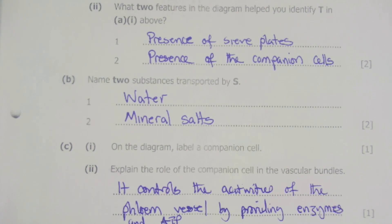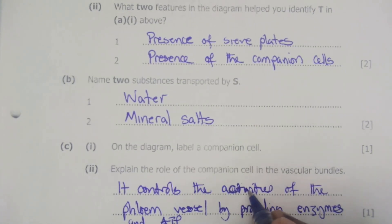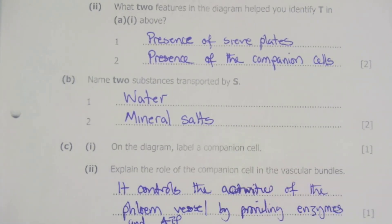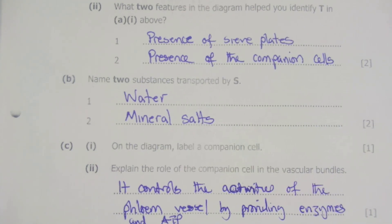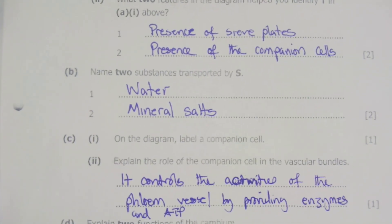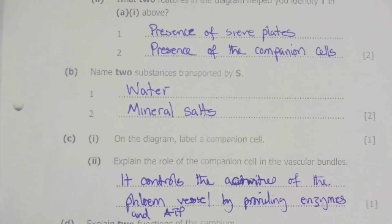As the substances are being transported in the phloem, it will actually be the one which is being controlled by the companion cell. So that is the function of the companion cell. It simply controls the activities of the phloem vessels by providing enzymes and the energy.